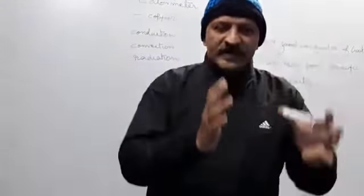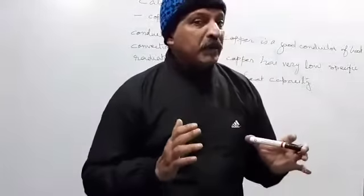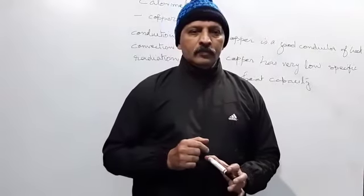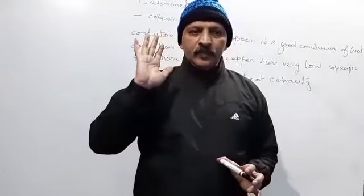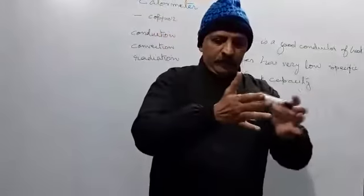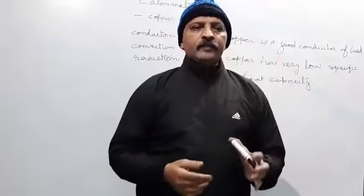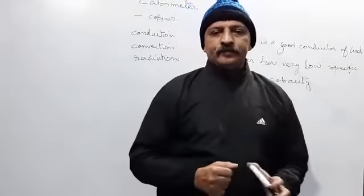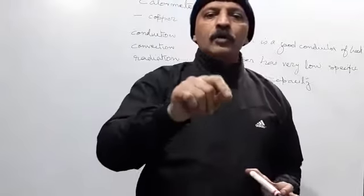So, the copper vessel or the calorimeter is placed in a wooden jacket. You know, wood is a poor conductor of heat. And the space between, that is the space between the walls of the wooden jacket and the calorimeter is filled with either wool or cotton.